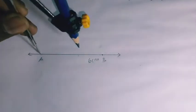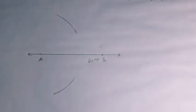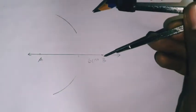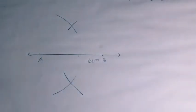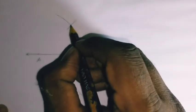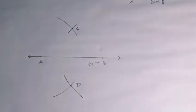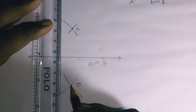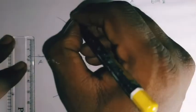With the same radius, place the compass at point B and draw another arc. Mark the intersection points as C and D. Next, connect C and D with a straight line. This line CD is the perpendicular bisector of AB.